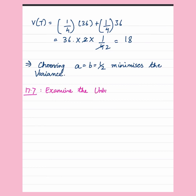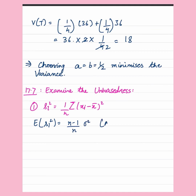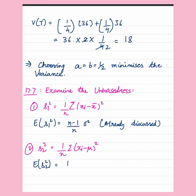We will move on to examining the unbiasedness of the given estimates. The first one is a very common part we have done many times — always know that 1/n times summation of (Xi minus X-bar)² is not an unbiased estimator of sigma squared. The second one is S2 squared — please notice the difference between S1 squared and S2 squared. S2 squared is an unbiased estimator of sigma squared.